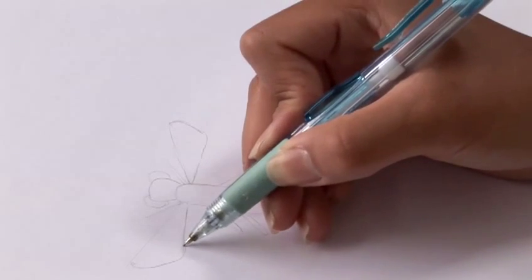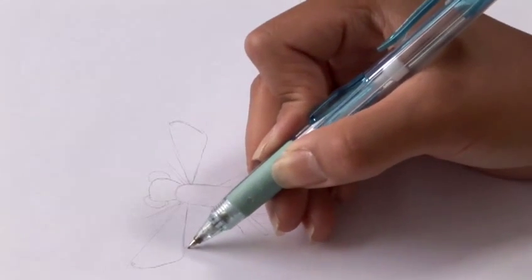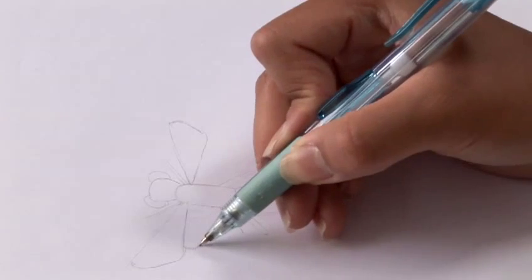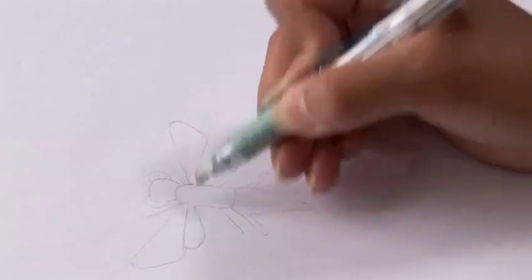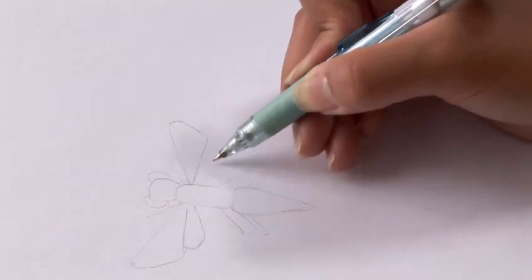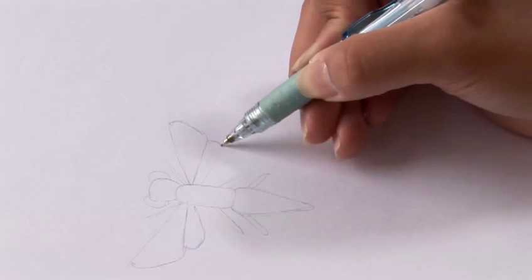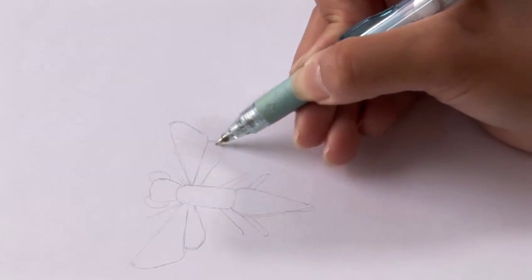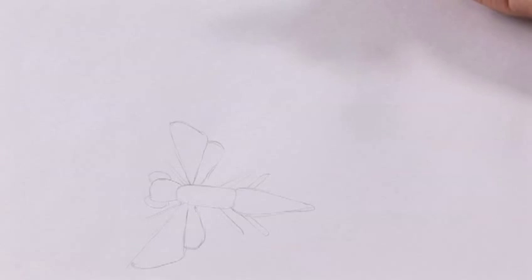And these wings are going to have a second part. And I'm just going to roughly draw in that second part. Just like a curve and then angled into the body.